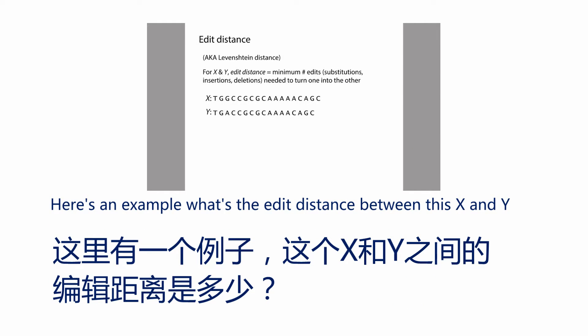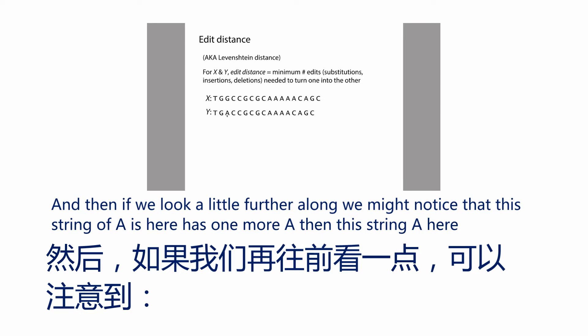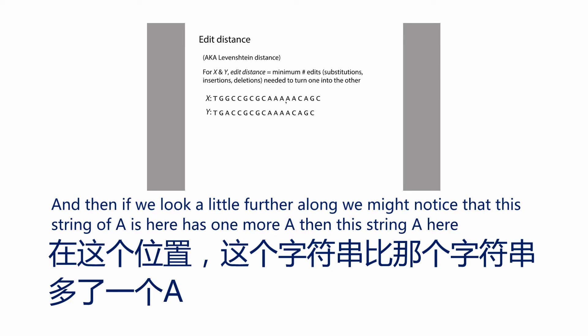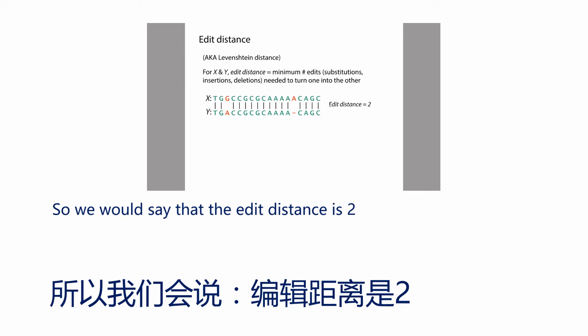Here's an example. What's the edit distance between this x and y? We can see a substitution here. And if we look further along, this string of A's has one more A than the other string of A's, so there's also an insertion. That means there are two edits — one substitution and one insertion in x with respect to y — so the edit distance is two.